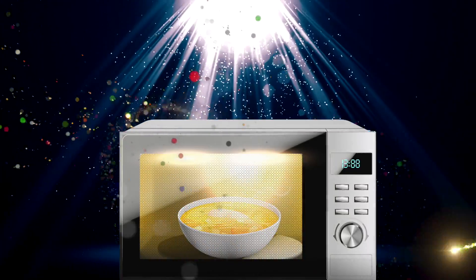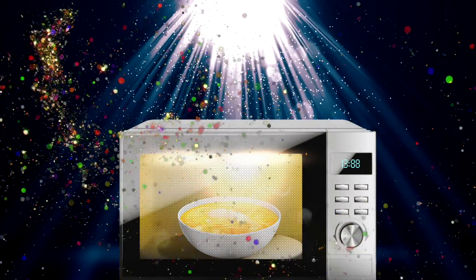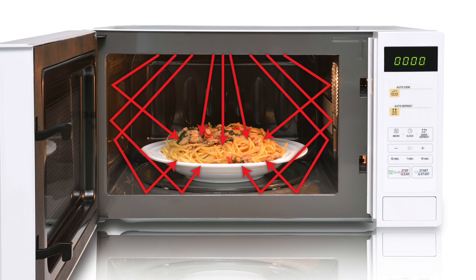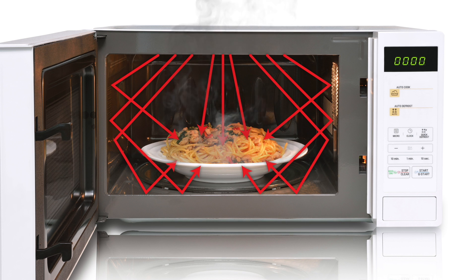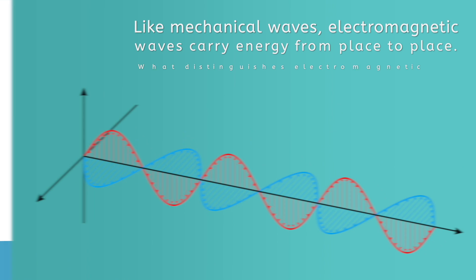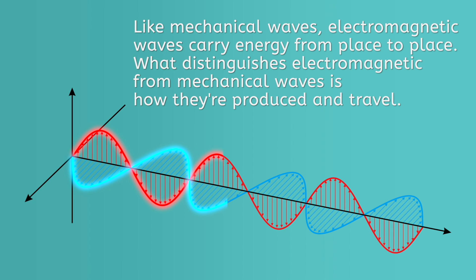It turns out microwaves aren't magical appliances after all — convenient, yes, magical, nope. Microwaves direct invisible radiation waves towards the food we place inside of them. The radiation transfers energy to the food, causing it to get warmer. The radiation is in the form of microwaves, a type of electromagnetic wave. Electromagnetic waves are transverse waves consisting of changing electric fields and changing magnetic fields. Like mechanical waves, electromagnetic waves carry energy from place to place.